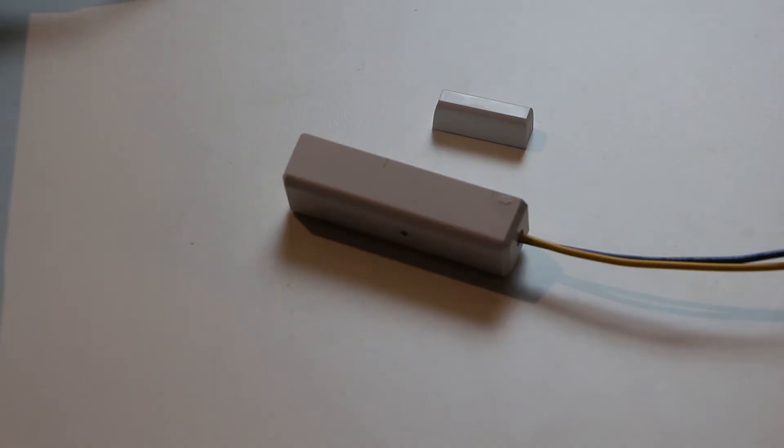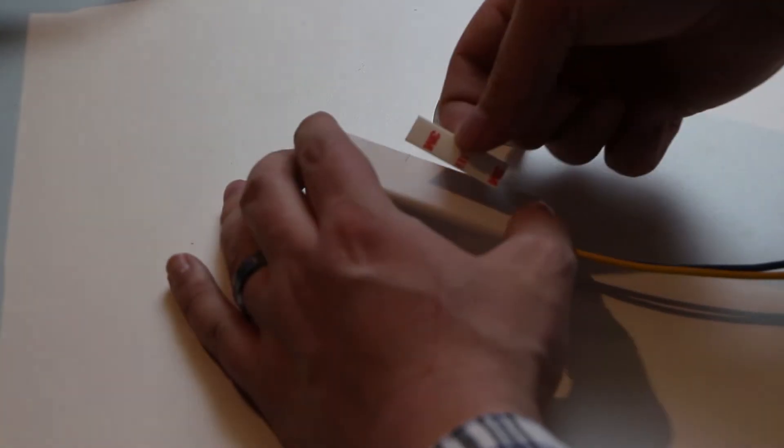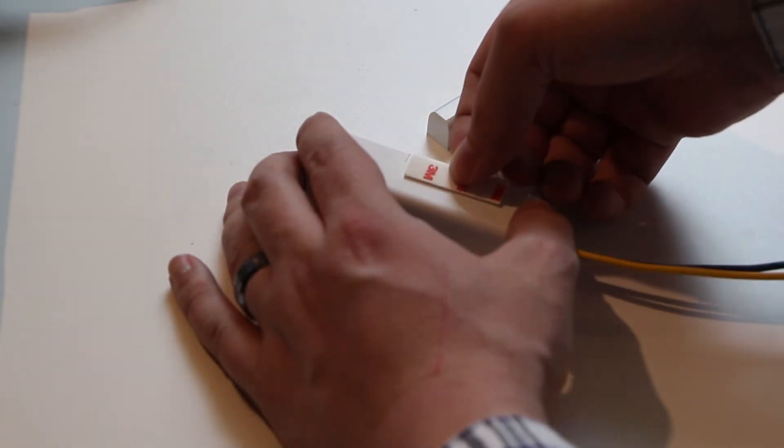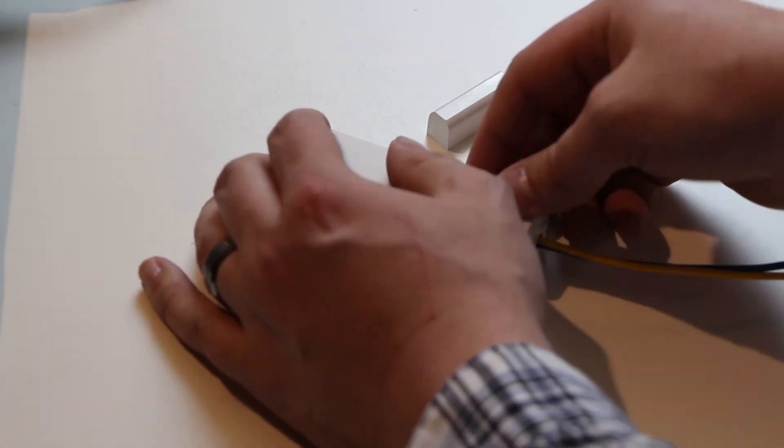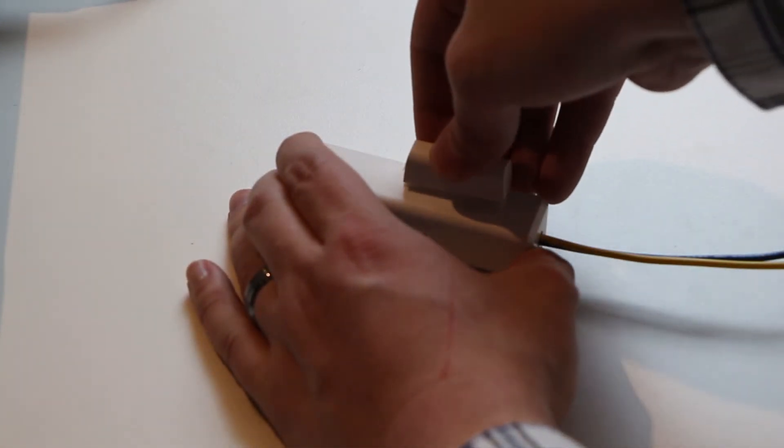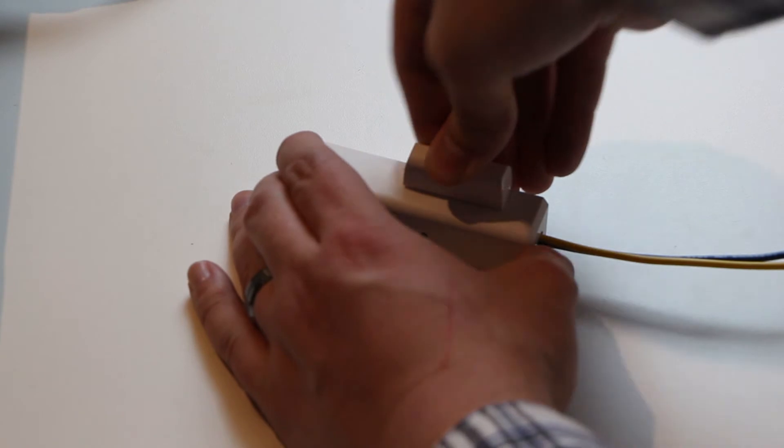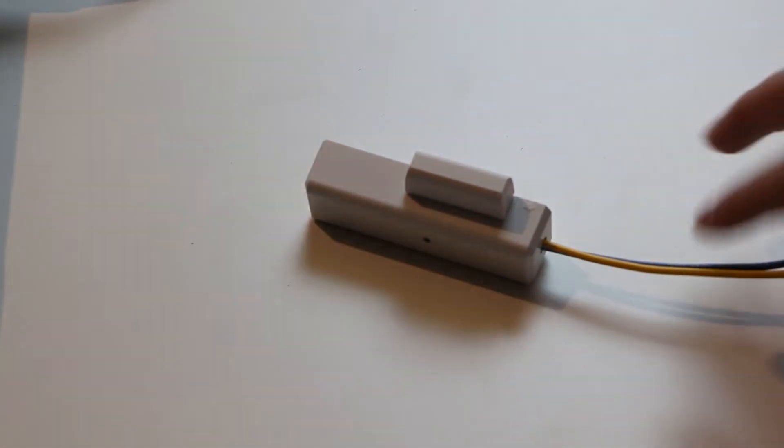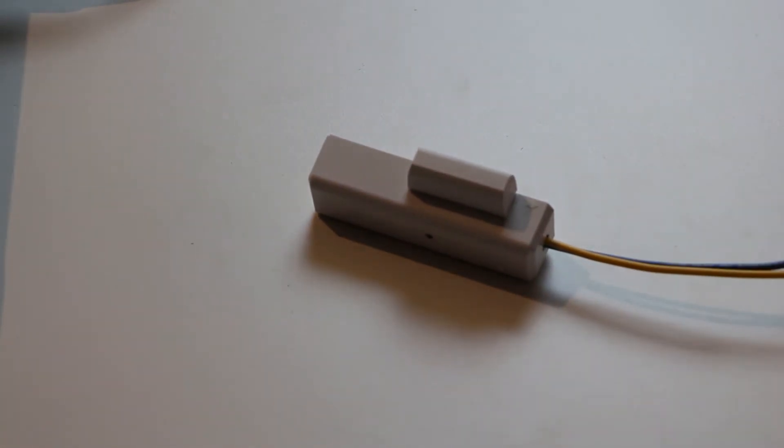So one big quirk to using these Z-Wave door and window sensors as just a contact sensor is that if you do not have the magnet engaged, like a door closed, it will constantly read in the open state. So since we're not going to use this as a door sensor, I'm just going to stick the magnet right to the side. That way we're only ever reading the contact set.